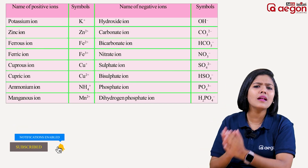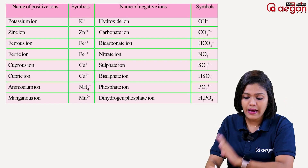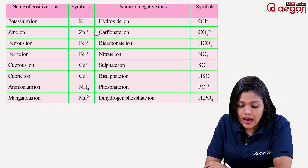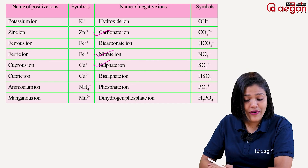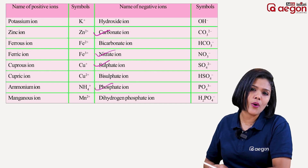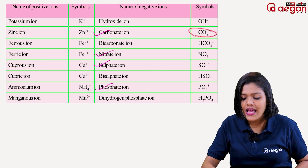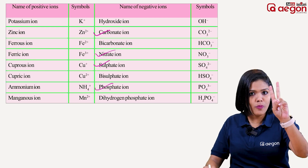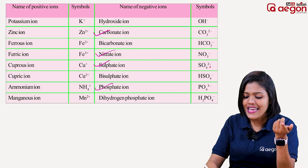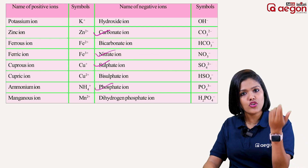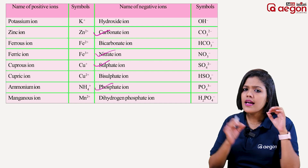The main ions we must remember are: Carbonate ion CO3 2-, Nitrate ion NO3-, Sulfate ion SO4 2-, and Phosphate ion PO4 3-. These are the key polyatomic anions we need to learn for writing chemical formulas.